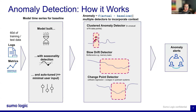Then you do baseline establishment. The system uses historical data to establish a baseline of normal behavior within your application and services, involving analyzing patterns and identifying regular fluctuations and trends. Then you have dynamic thresholds — unlike static thresholds, which are fixed and not flexible, the anomaly detection employs dynamic thresholds that adjust in real time based on the ongoing analysis of the data.